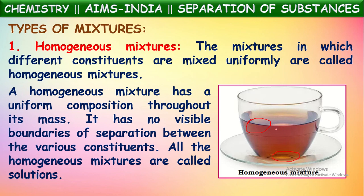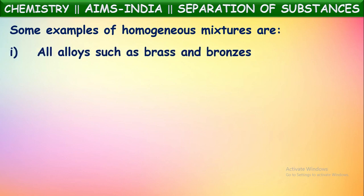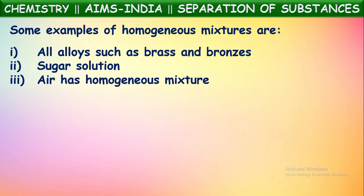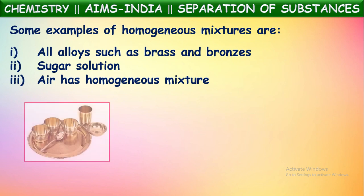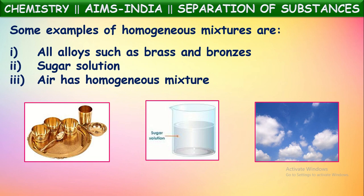Homogeneous mixtures are also called solutions. Some examples of homogeneous mixtures include all alloys such as brass and bronze — they are made up of more than one kind of metal but appear like one metal. Sugar solution is made up of water and sugar but seems like one liquid. Air is a mixture of many gases like carbon dioxide, oxygen, nitrogen, and water vapor. All these come under homogeneous mixtures.